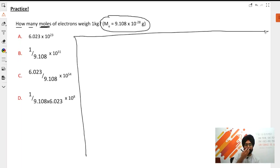First, let us calculate the number of electrons that weigh one kilogram, and then we will see how many moles of electrons that is. Weight on the left side, quantity on the right side. Weight of one electron is 9.1 × 10^-28 grams.